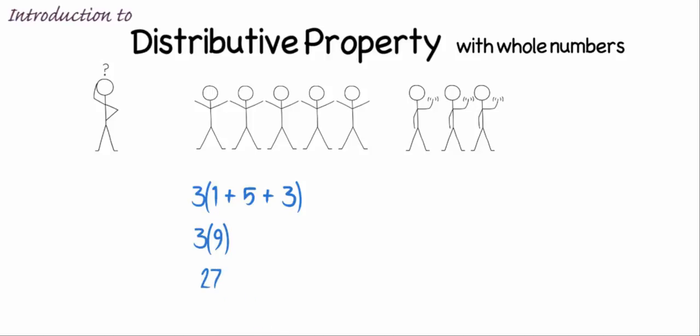I also could have done this individually. I could have distributed the three by multiplying each of those situations separately. Because the distributive property says multiplying a group of numbers individually is the same thing as adding it first and then multiplying.